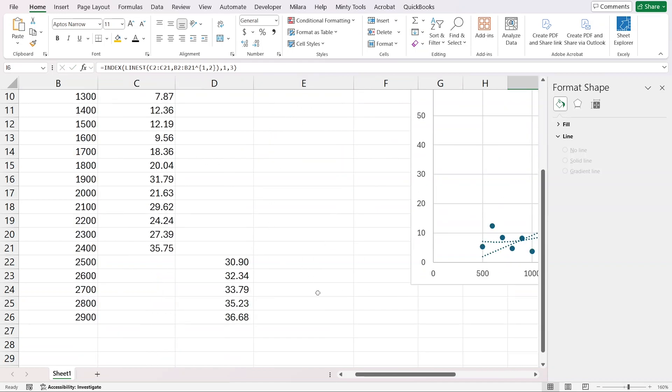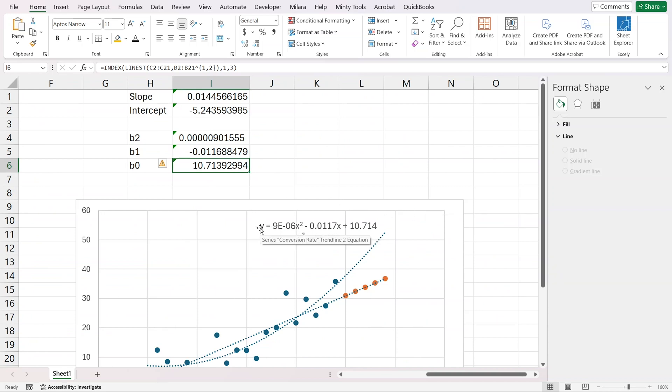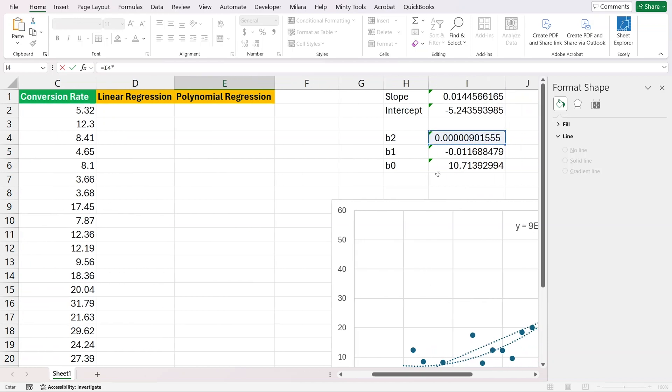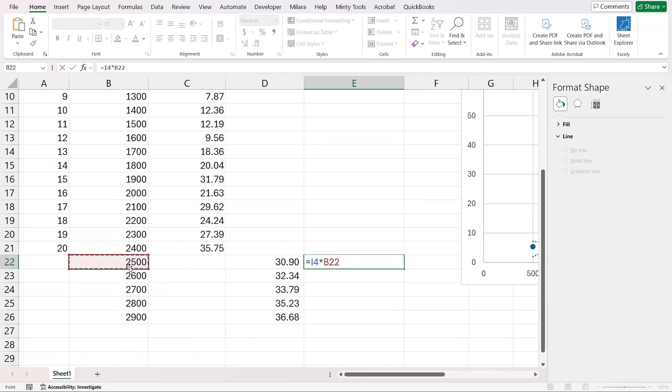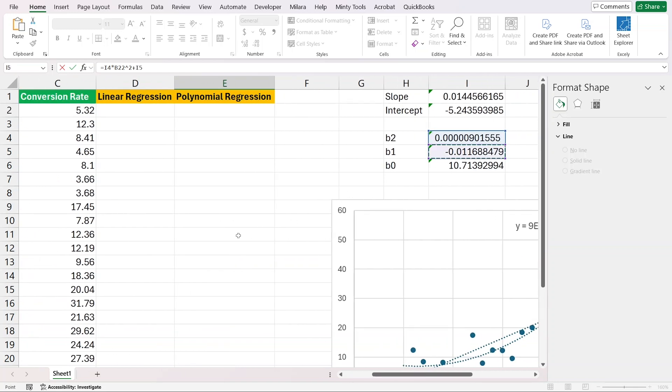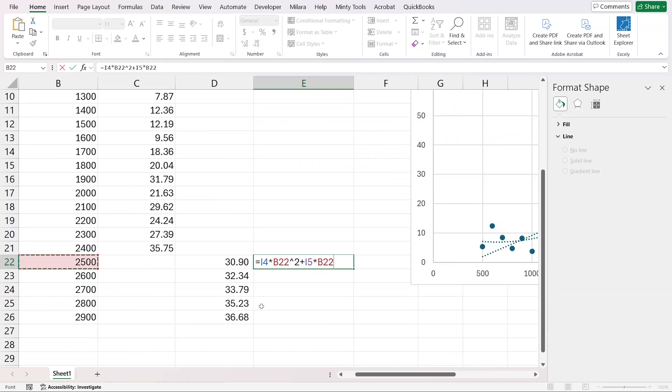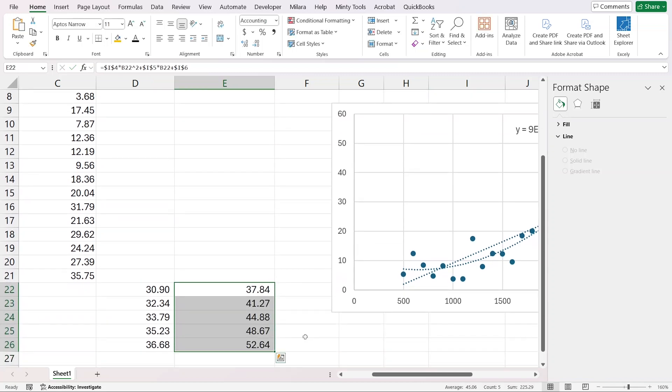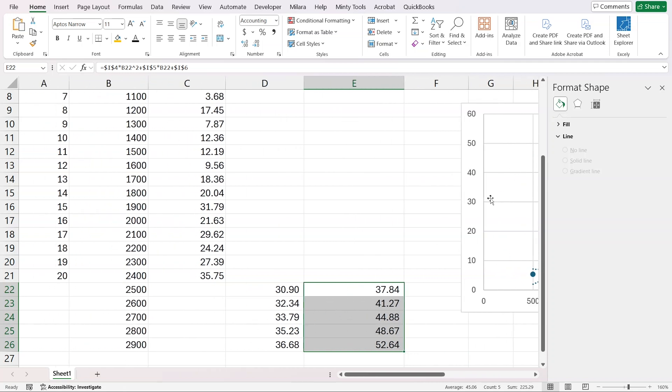Now we can use those to calculate the same forecast using the polynomial regression model. Essentially we have y equals B2 multiplied by x squared minus B1 multiplied by x plus B0. So here we'll have our B2 multiplied by x, the marketing spend, squared to the power of two, plus this multiplied by our x value, plus our B0. I forgot to fix those. Now I can copy those down. This is how I get my predictions using the polynomial model that we just fitted to our data.